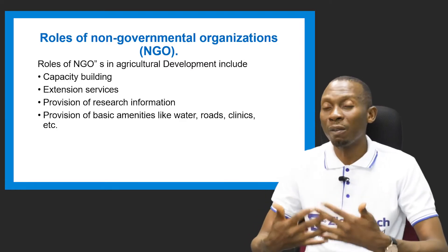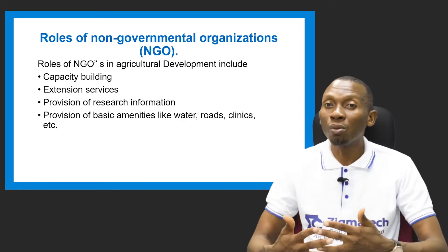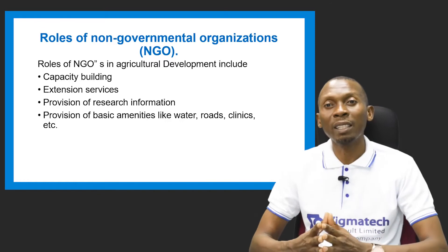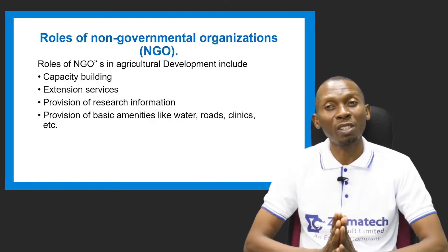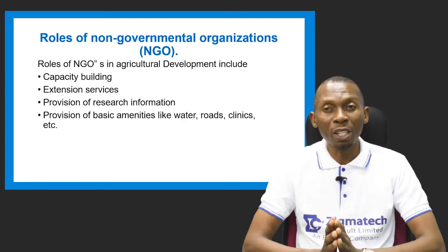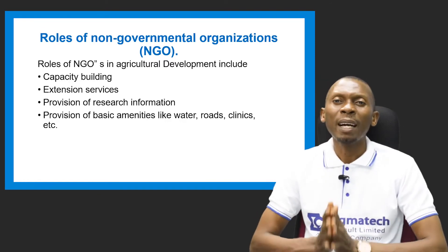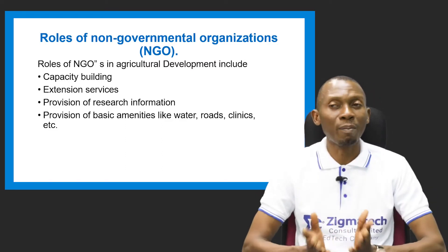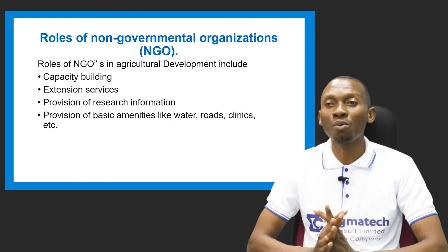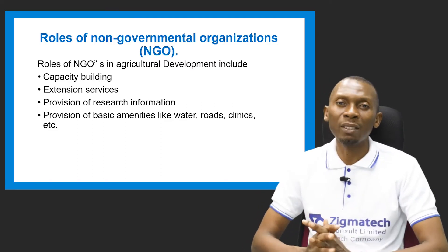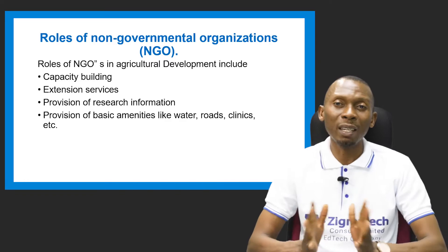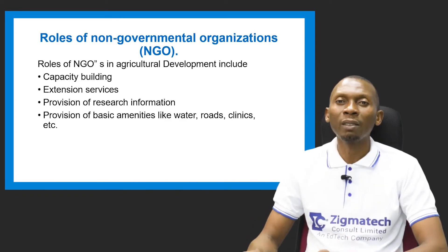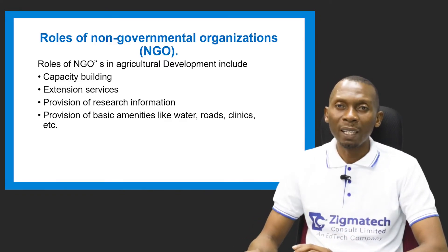Extension services are also provided, or specialists or extension officers are trained in order to carry new research information to the farmers. This is connected to the next point, which is provision of research information. And also the provision of basic amenities like pipe-borne water, roads, and clinics. So these are basically the roles of non-governmental organizations.